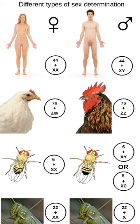The accepted hypothesis of XY and ZW sex chromosome evolution is that they evolved at the same time, in two different branches. However, there is some evidence to suggest that there could have been transitions between ZW and XY, such as in Xiphorphorus maculatus, which has both ZW and XY systems in the same population, despite the fact that ZW and XY have different gene locations.